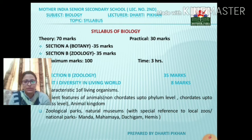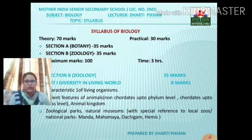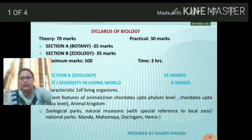The botany section, which we discussed earlier, is 35 marks. It has further units and sub-topics we have already seen. Now what we discuss today is the zoology portion, which again is 35 marks. It is further divided into 4 units. So see section B, that is zoology.